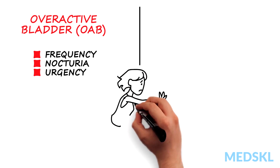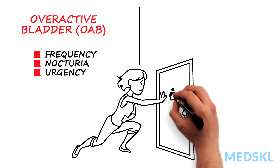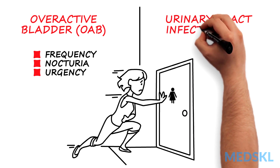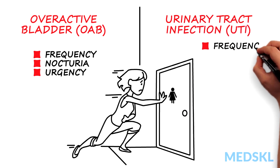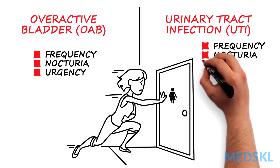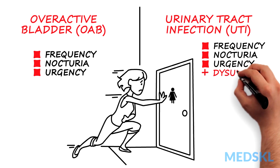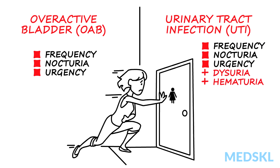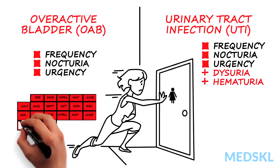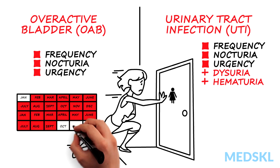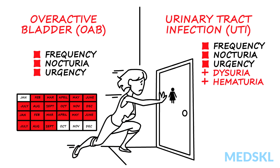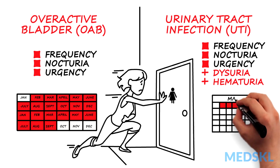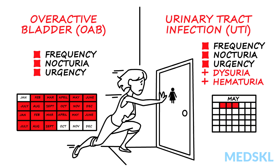OAB symptoms occur with or without urgency incontinence. Symptoms of a urinary tract infection, UTI, are similar but additionally include dysuria, which is painful voiding, and hematuria. OAB tends to be a chronic progressive condition, while UTI symptoms are acute and may be associated with fever and malaise.